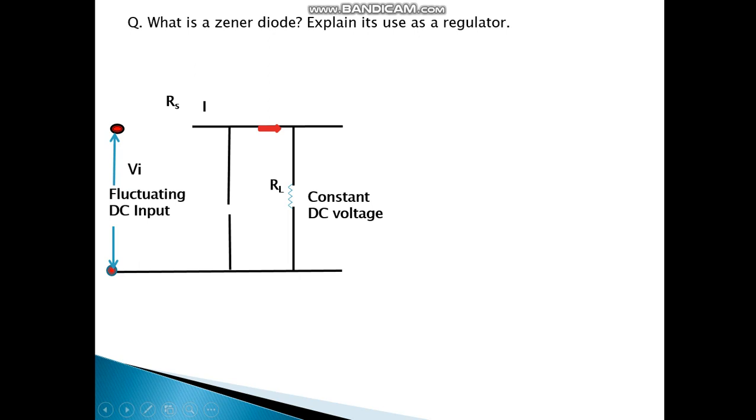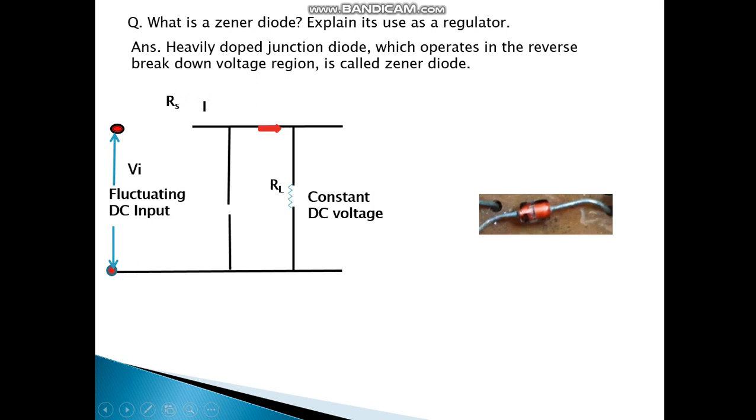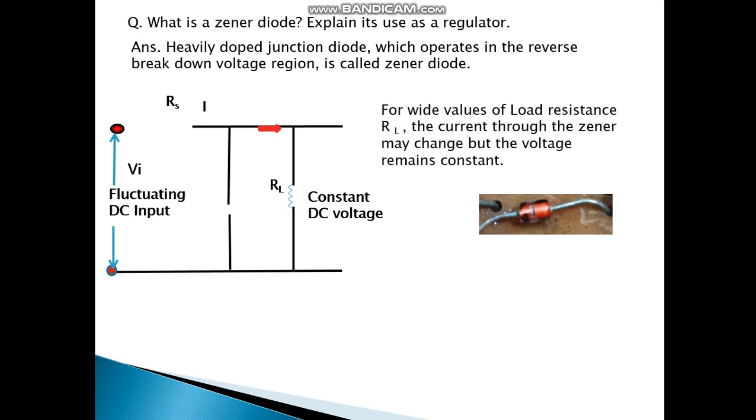So the VI, the input fluctuating voltage which we had got, for example from a rectifier, can be converted to a constant voltage using a Zener. So a Zener is a heavily doped junction diode which operates in the reverse breakdown region. For wide values of load resistance RL, the current through the Zener may change but the voltage domain is constant. There is a circuit for the voltage regulator using a Zener diode. That's a symbol.